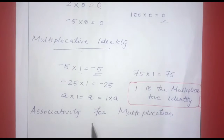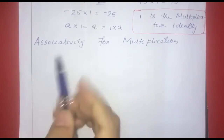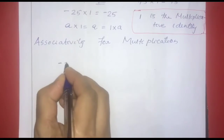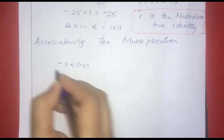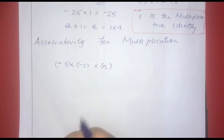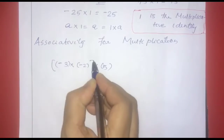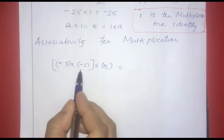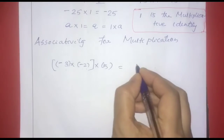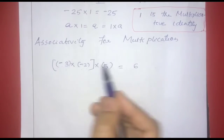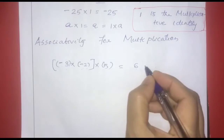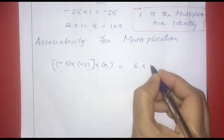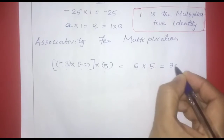The next property is associativity for multiplication. What is associativity? We multiply three integers. For example, negative 3 into negative 2 into 5. We first multiply negative 3 into negative 2: 3 into 2 is 6, and negative times negative is positive, giving 6.